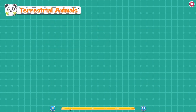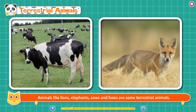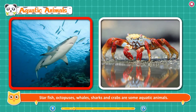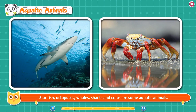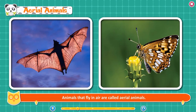Terrestrial Animals — animals that live on land are called terrestrial animals. Lions, elephants, cows, and foxes are some terrestrial animals. Aquatic Animals — animals that live in water are called aquatic animals. Starfish, octopuses, whales, sharks, and crabs are some aquatic animals. Amphibians — animals that live both in water and on land are called amphibians. Frog, tortoise, and crocodile are some amphibians. Aerial Animals — animals that fly in air are called aerial animals. Birds, bats, and butterflies are examples of aerial animals.